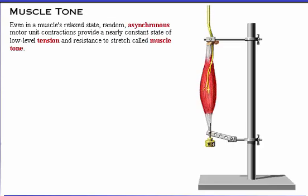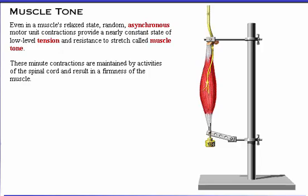Even in a muscle's relaxed state, random, asynchronous motor unit contractions provide a nearly constant state of low-level tension and resistance to stretch, called muscle tone. These minute contractions are maintained by activities of the spinal cord and result in a firmness of the muscle.